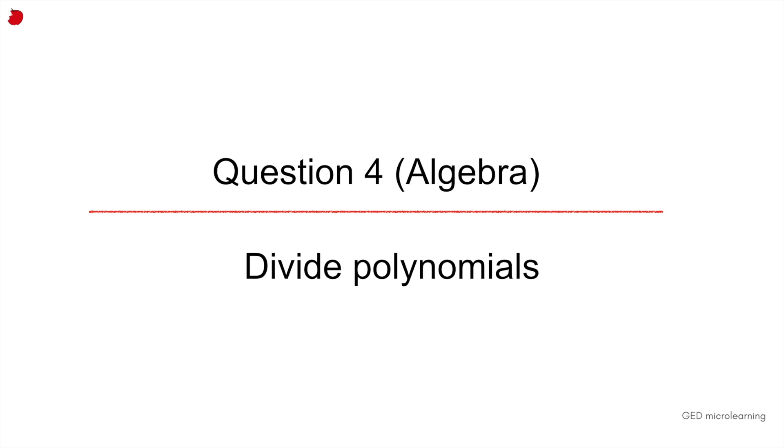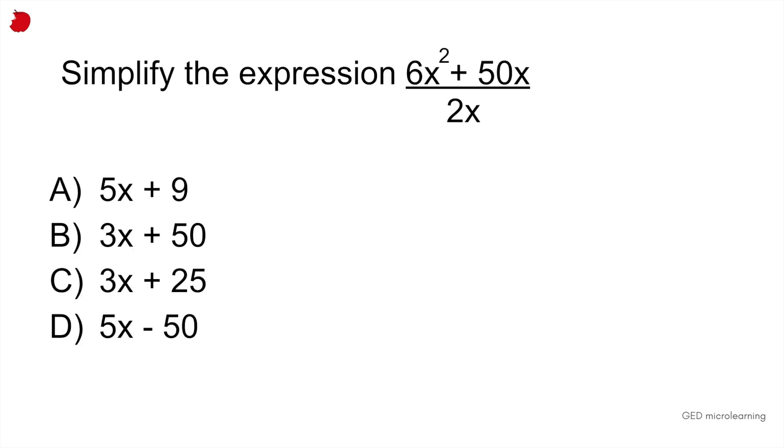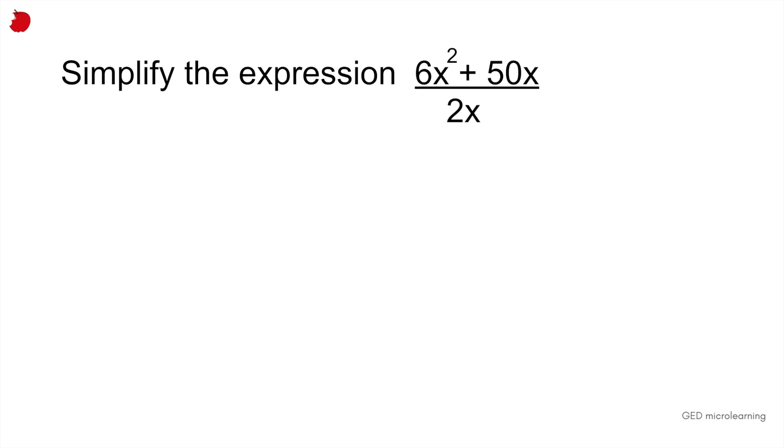Question four is another algebra problem looking at dividing polynomials. And it tells you to simplify this expression, 6X squared plus 50X divided by 2X. So sometimes these are kind of straightforward. Sometimes they're a little bit tricky. So what you have to do whenever you see a polynomial like this and they ask you to divide is to try to find, to factor rather a common term. So try to take a factor from the numerator, the number on the top and kind of factor it out of that equation.